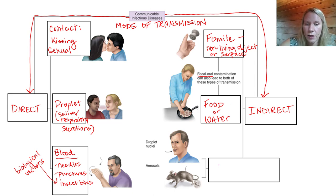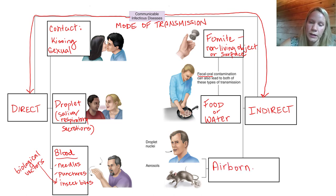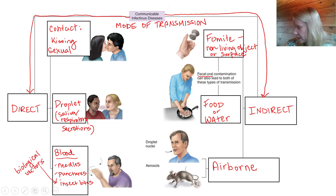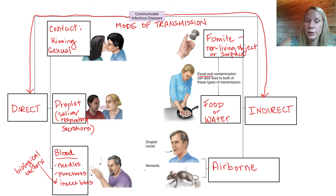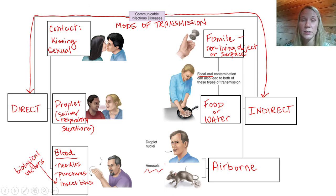The last indirect method is airborne transmission, which is different from droplet transmission. With droplet transmission, respiratory droplets are present on surfaces or temporarily in the air. With airborne transmission, infectious particles remain in the air for long periods of time. Some infectious agents are transmitted via animal droppings — invisible aerosols that you pick up simply by breathing as you walk by.